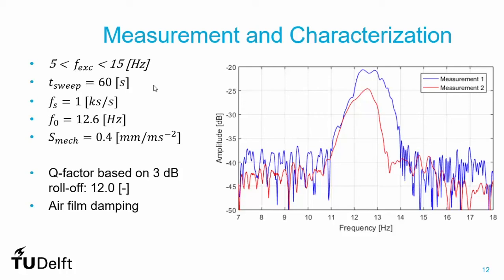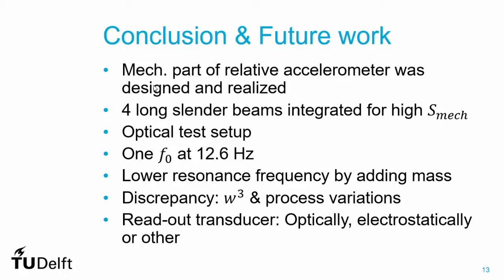In conclusion, the mechanical part of the relative accelerometer was designed and realized. Four long slender beams were integrated in a frame and proof mass to yield maximum mechanical sensitivity. An optical setup was designed for determination of the mechanical spectrum and resonant frequency. A resonant frequency of 12.6 hertz was measured; a lower resonant frequency was obtained by adding mass. The discrepancy from simulation can be explained by process variations and the fact that beam stiffness is proportional to the third power of width. The readout transducer remains an ongoing project for wafer-level integration, either optically or electrostatically.